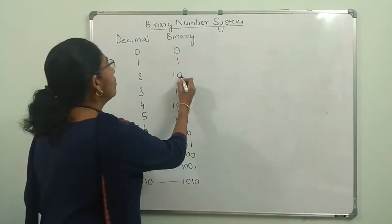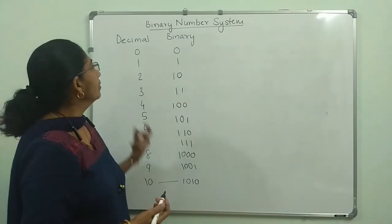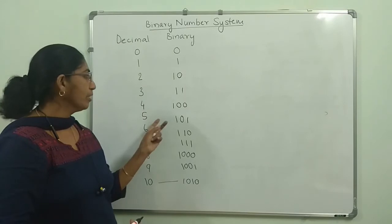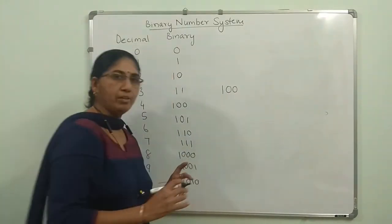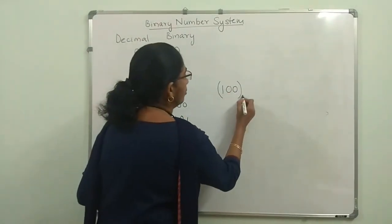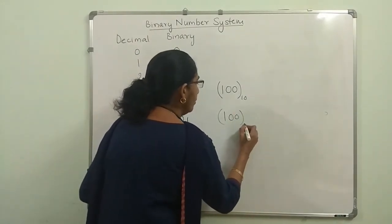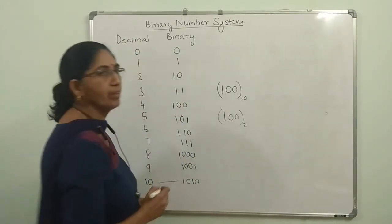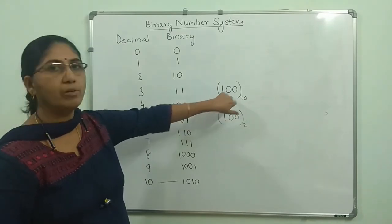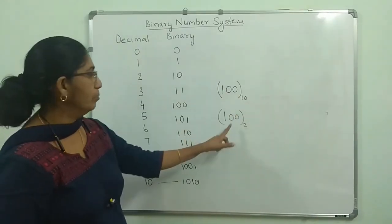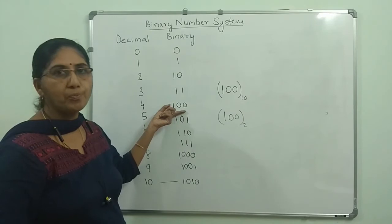When you have many numbers represented simultaneously — say decimal and binary — you will specify which system a number belongs to. A number is written with its base as a subscript. For example, 100 with subscript 10 means it is in the decimal system and has value 100. But 100 with subscript 2 means it is binary, and its value is 4.